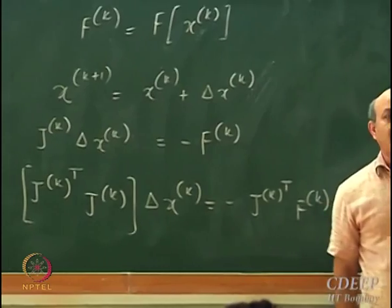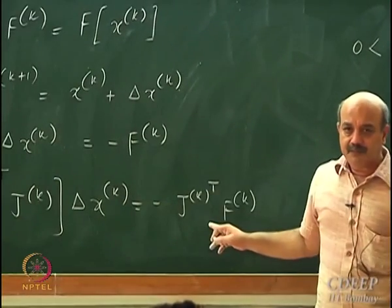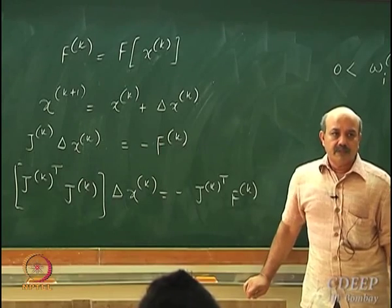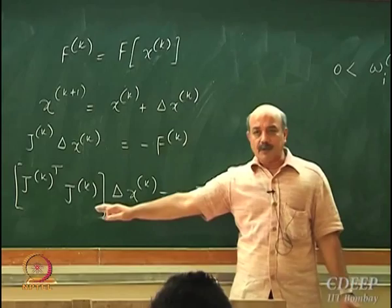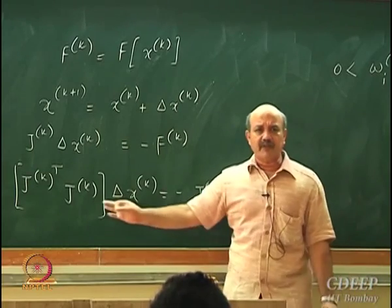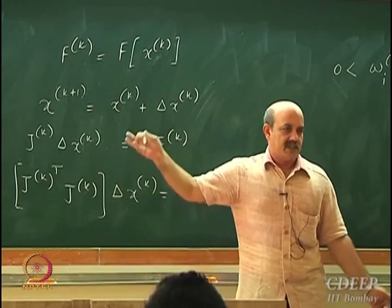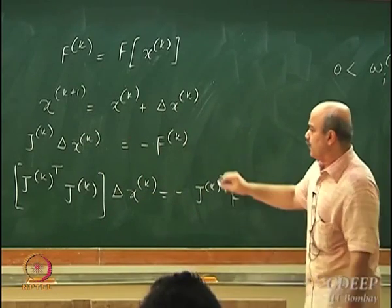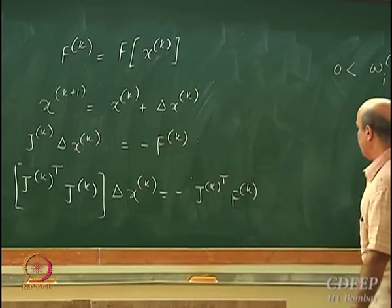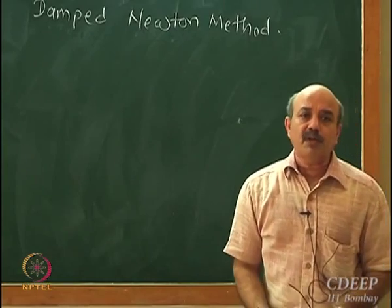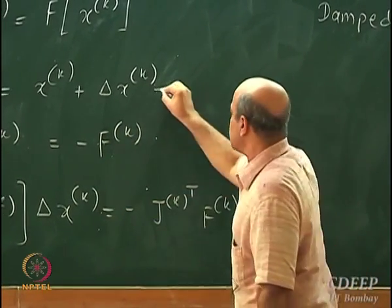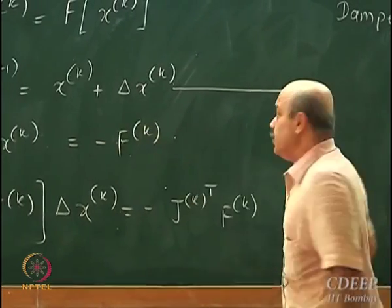In the computing tutorial I asked you to modify this step by pre-multiplying by J^k transpose and then solve the resulting problem using the Gauss-Seidel method. The reason is this becomes positive definite, and Gauss-Seidel is guaranteed to converge for positive definite matrices - they are well-conditioned and easier to work with. Another modification is the damped Newton method.